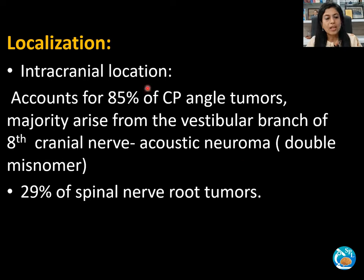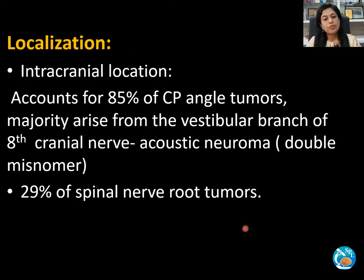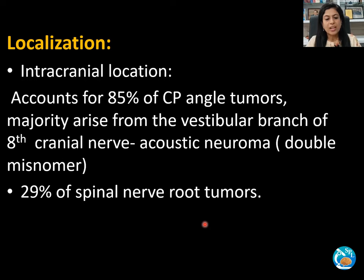Coming to localization: these are intracranial in location and account for 85% of CP angle tumors, with the majority arising from the vestibular branch of the 8th nerve, commonly referred to as acoustic neuroma — which is a double misnomer, as it arises from the vestibular branch and not the acoustic branch, nor is it a neuroma. Rarely, they may be found in a periventricular location.